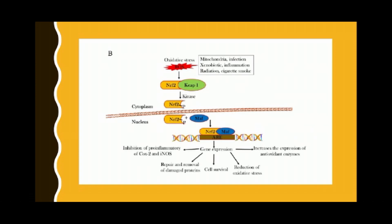Another example is the role of NRF2. During high mitochondrial activity, infection, xenobiotics, inflammatory reactions, radiation, cigarette smoke, or any other oxidative stress — including cancer — when the oxidative stress level is very high, NRF2 and KEAP1 dissociate in the presence of kinase. NRF2 translocates to the nucleus where it binds with MAF, then binds to the ARE region. This complex regulates gene expression including inhibition of pro-inflammatory COX2 and iNOS, repair and removal of damaged proteins, cell survival, reduction of oxidative stress, and increased expression of antioxidant enzymes.